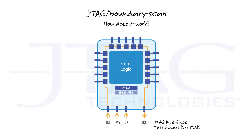Other data registers can be accessed through the TAP as well. A special register, the instruction register, can also be accessed through the TAP. To select between the different data registers, the instruction register is used, and it is accessed through the TDI and TDO pins of the chip. The TAP controller controls whether operations are performed on the instruction register or on a data register.